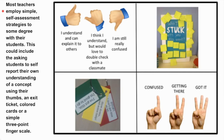In reality, most teachers employ simple self-assessment strategies to some degree or another with their students. This can, for example, include asking students to self-report their own understanding of a concept using their thumbs — thumbs up for 'I understand this and I can explain it to others,' thumb to the side indicating the student thinks they understand but would love to double check with a classmate, or a thumbs down to indicate that they are still really confused.